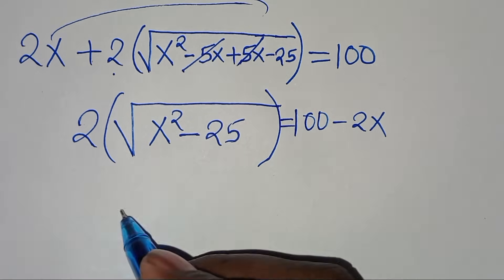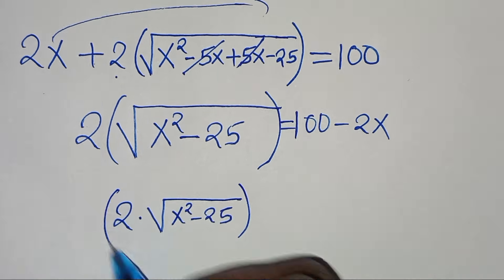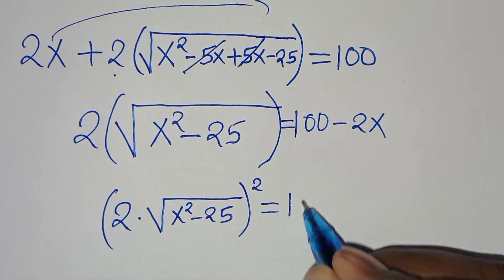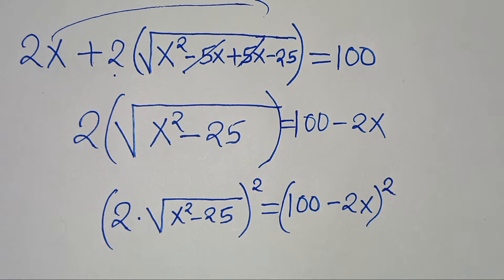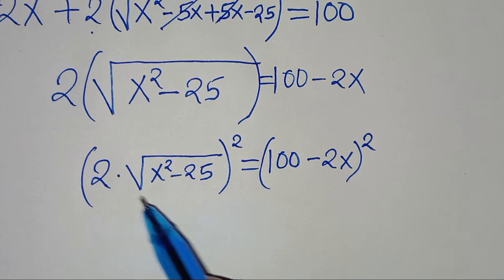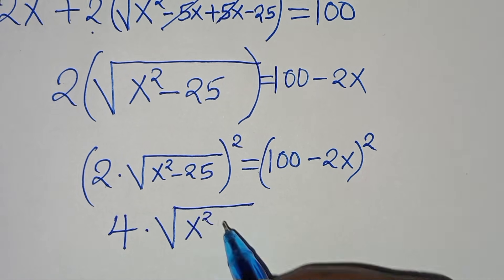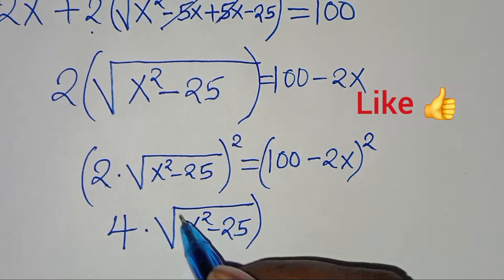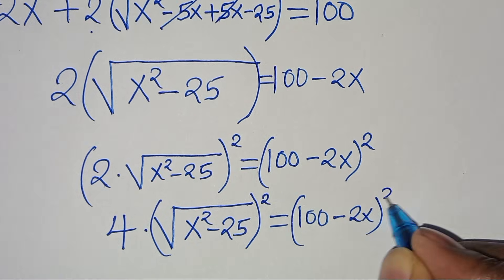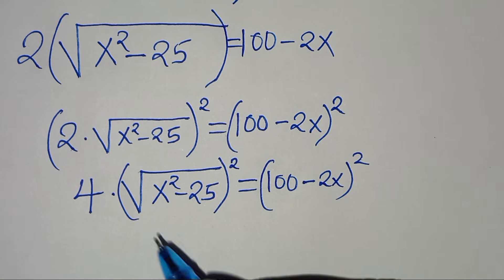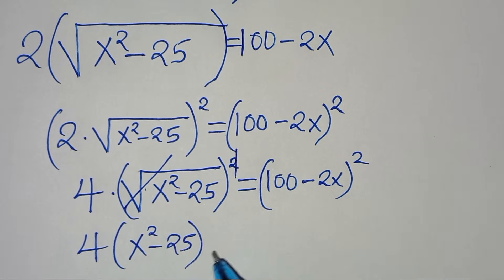Taking 2x to the right-hand side, we have 2 times the square root of (x²−25) equals 100 minus 2x. The next step is to square both sides: 2 squared times the square root of (x²−25) squared equals (100−2x) squared, giving 4 times the square root of (x²−25) squared.